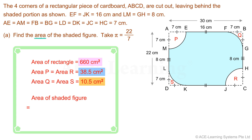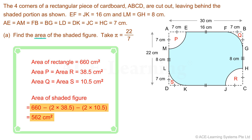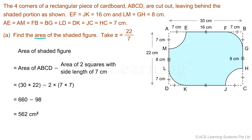So the area of the shaded figure is 660 minus twice of 38.5 minus twice of 10.5. This gives us an area of 562 square centimeters. This matches the answer we found earlier, so our answer for the area of the shaded figure is correct. The area of the shaded figure is 562 square centimeters.